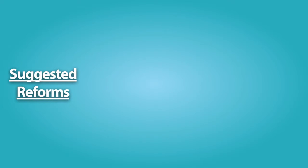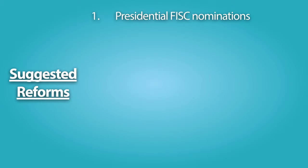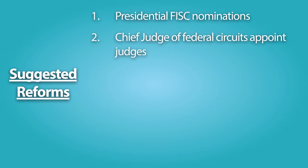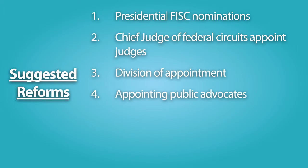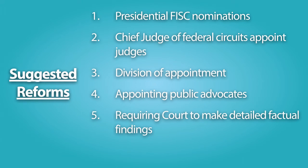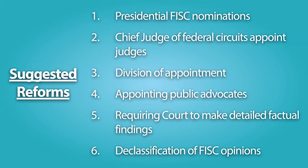Some proposed reforms include: requiring the President to nominate FISC judges subject to Senate confirmation; allowing the Chief Judge of each Federal Circuit to appoint one judge each; dividing the appointment of judges between the Chief Justice and the majority and minority leaders of both houses of Congress; appointing a public advocate or independent counsel to participate in FISC hearings and to challenge the government's surveillance applications; requiring the court to make detailed factual findings supporting its decisions; and declassifying many of the FISC court opinions or releasing redacted opinions that reveal the resolution of constitutional and other legal issues presented in the applications.